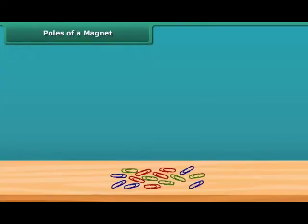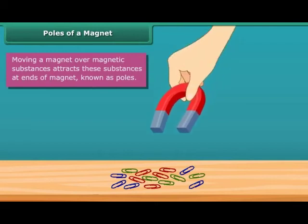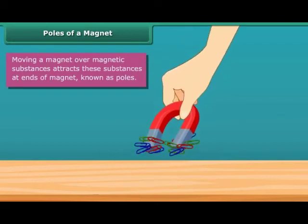Poles of a Magnet. When you move a magnet over magnetic substances, you will see that these substances get attracted to particular parts of the magnet only. These are generally the two ends of the magnet. These ends are called poles of the magnet.